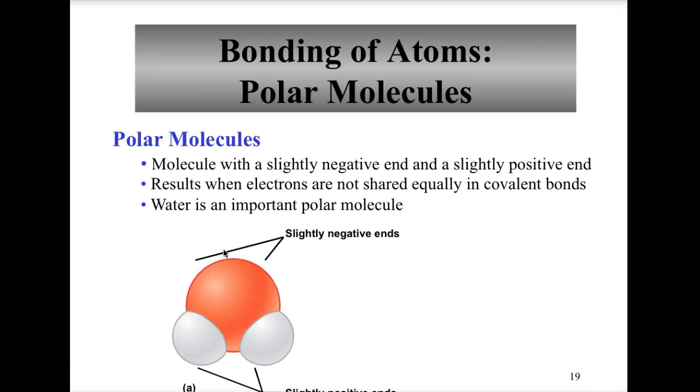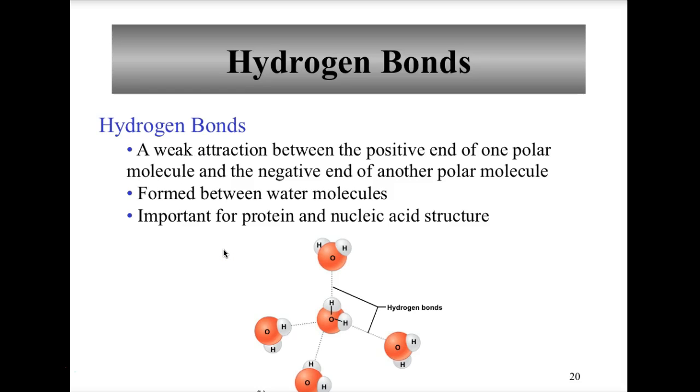Because of polar covalent bonding in the water molecule, we get those slightly positive and slightly negative regions, and we could form another type of bond called a hydrogen bond.